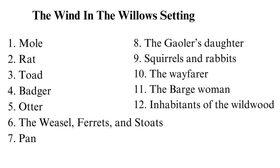Toad, or Toad the Toadie, is the wealthy owner of Toad Hall. He inherited his property from his father and is known for boasting, obsessive behavior, and immature outbursts. His obsession with motor cars lands him in trouble, which his friends have to help him with.